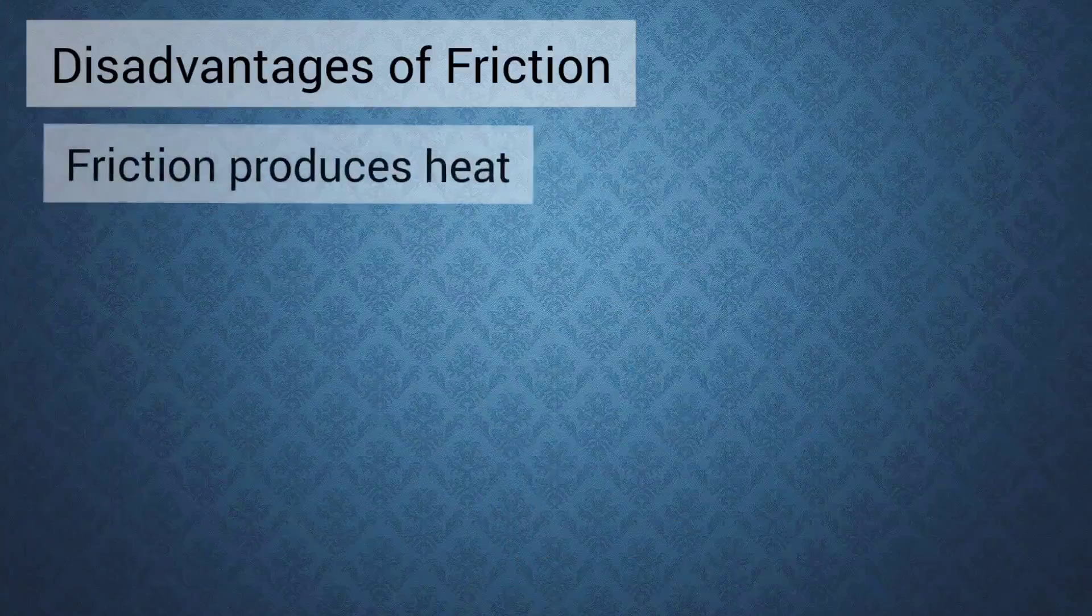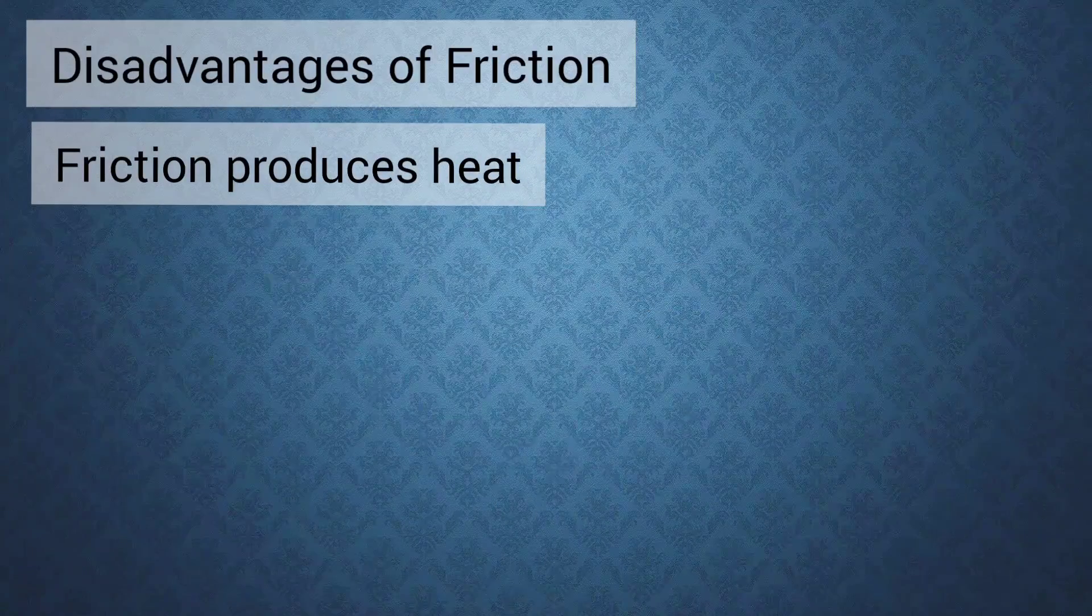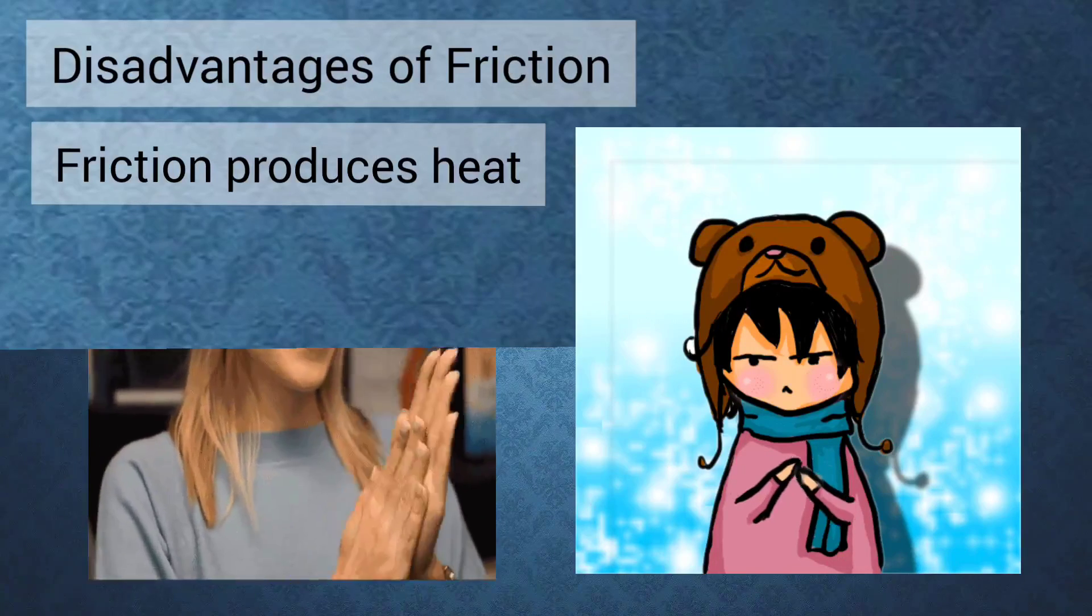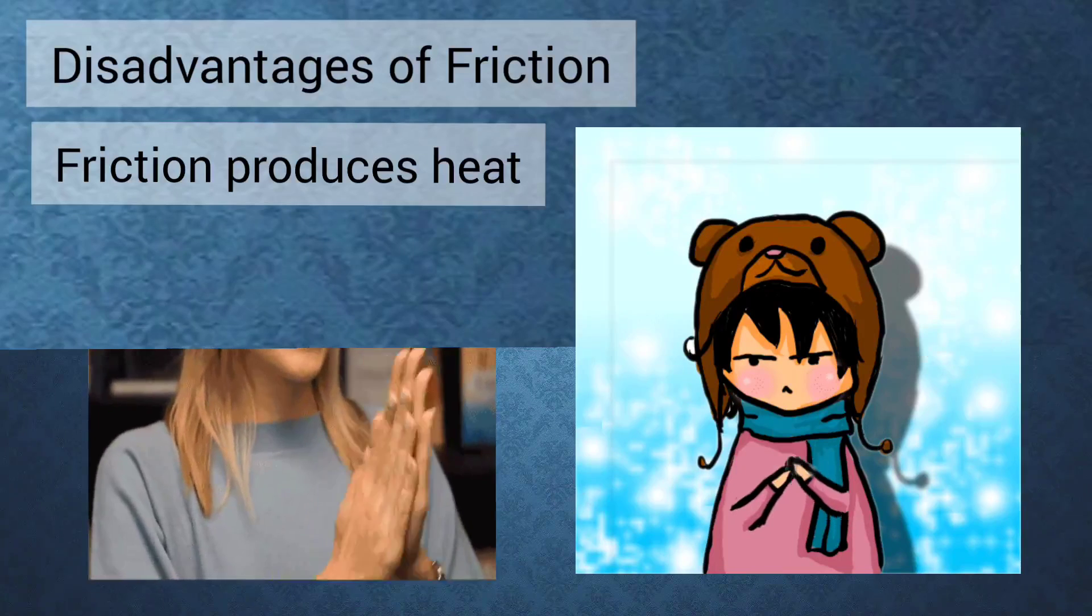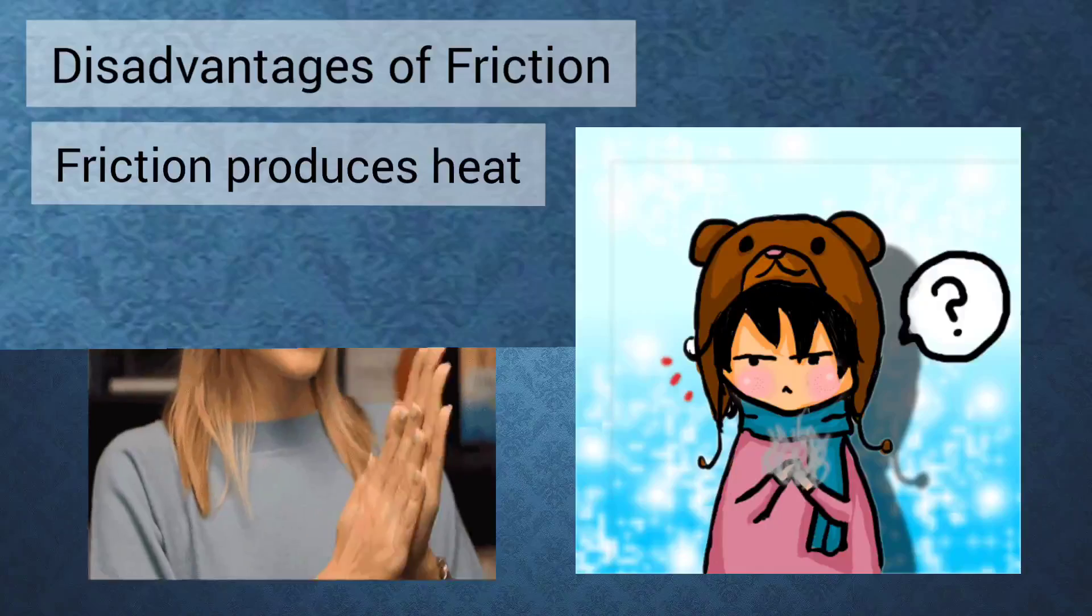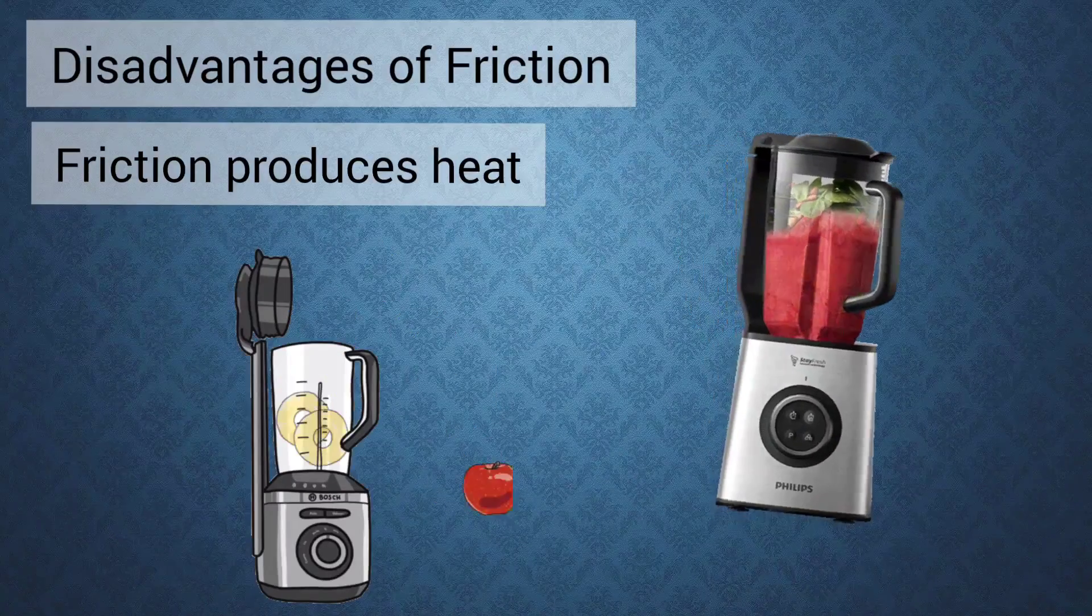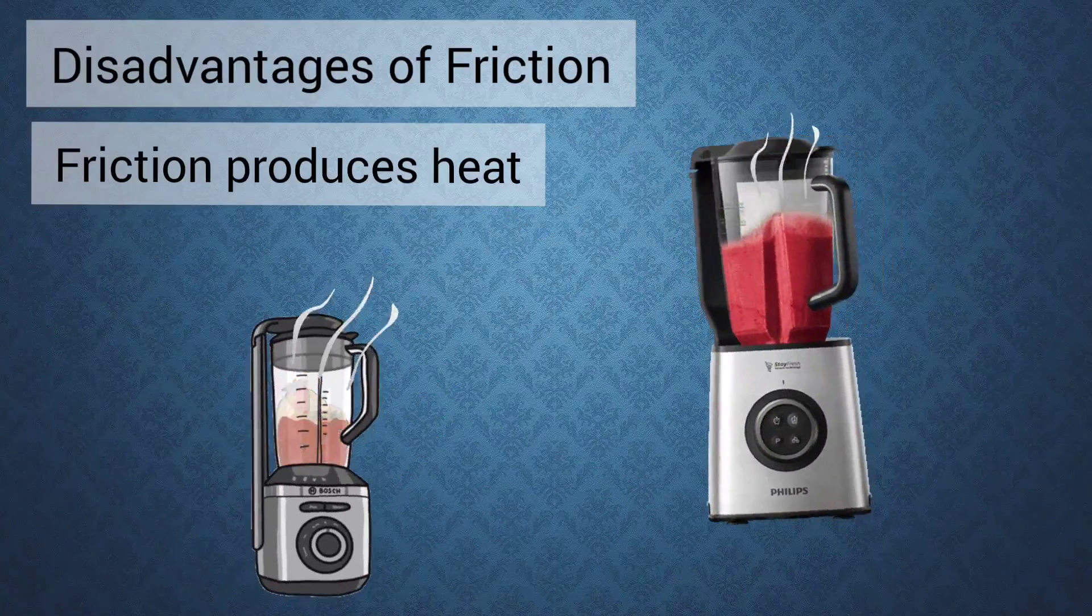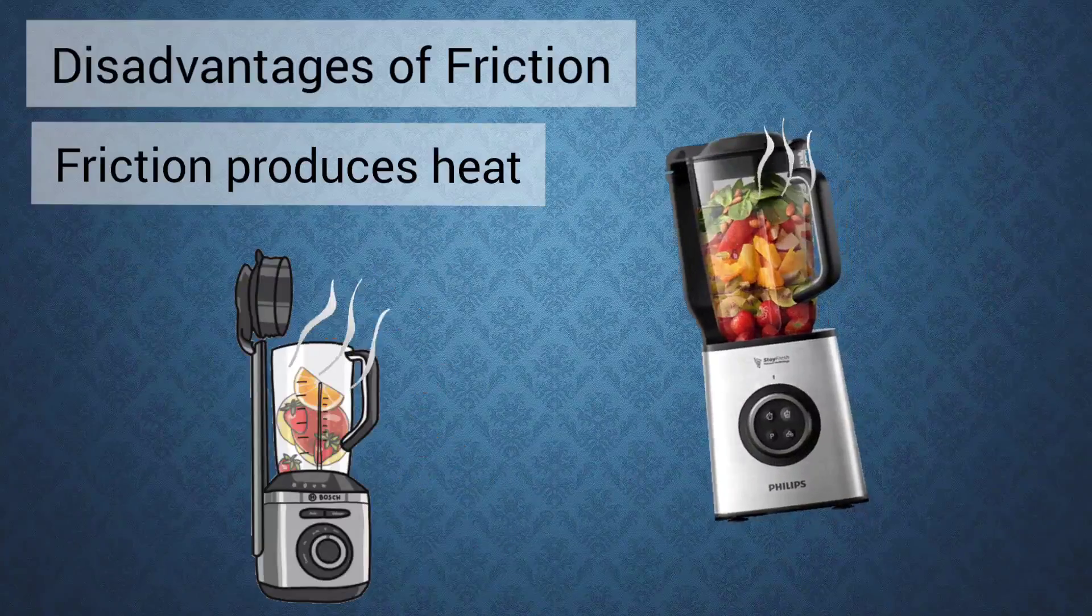Friction produces heat which may damage machines. Students, if you will rub your hands together for a few seconds you will feel that they get warm. This is because friction between the hands produces heat. Similarly, when we operate a mixer grinder for a few minutes its jar becomes hot. Here again heat is produced by friction.